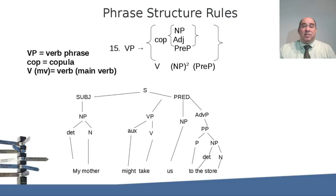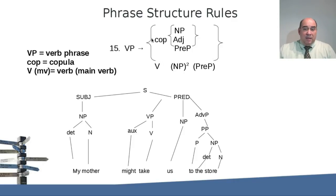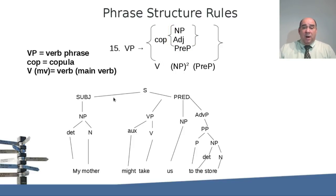So, more on phrase structure rules. We're looking at number 15, which is your verb phrase. Your verb phrase can have your main verb and it can be a copula — the be verb — or it can be broken down into other parts. With the copula, I can have a variety of things after it: it can be a noun, it can be an adjective, it can be a preposition. Now we're going to look at the main verb. Let's look at another example with a sentence that's broken down.